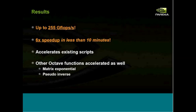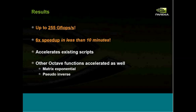We've seen performance of up to 255 GIGAFLOPs — a 6x speedup — in under 10 minutes of work. This accelerates all existing scripts that use matrix-matrix multiplication. We've also accelerated more than just the direct matrix-matrix multiplication call: anything that uses it internally is accelerated as well, which in this case includes the matrix-exponential and the pseudo-inverse.